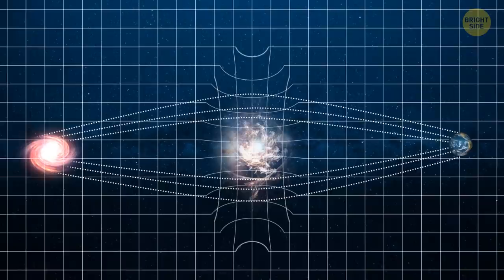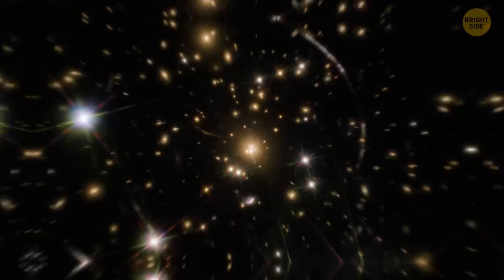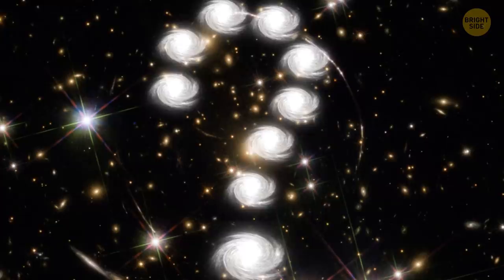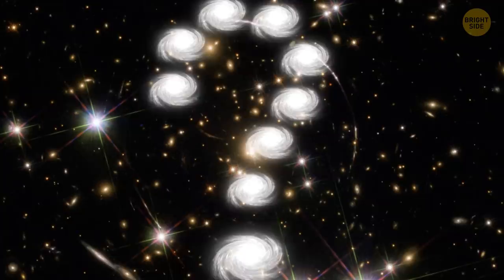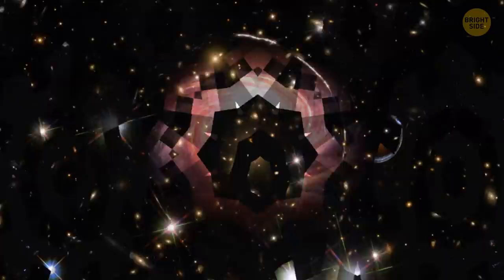As a result, to observers, it looks like arcs of light, each with a light copy of the galaxy. But which of these 12 copies is the real galaxy? Well, none of them. But at the same time, all these copies are one real galaxy. That's how optical illusions work.